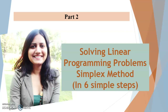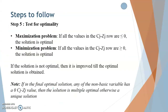Step 5 says you have to test for optimality of the Simplex tableau. In the case of a maximization problem, you have to check all the values in the Cj minus Zj row, and if all the values are less than or equal to 0, it means the solution is optimal and we stop solving the table further — whatever solution we have arrived at is the final solution.